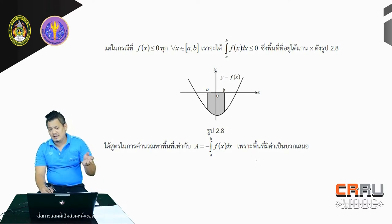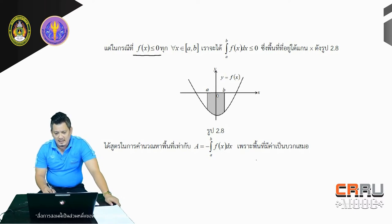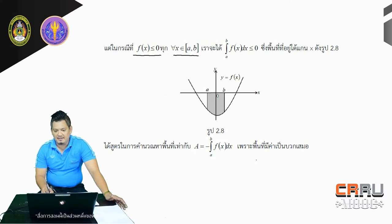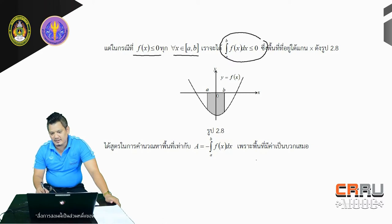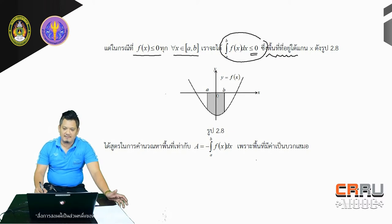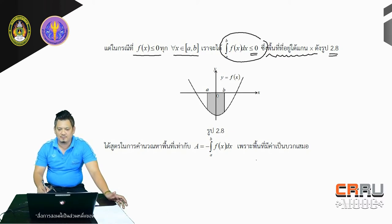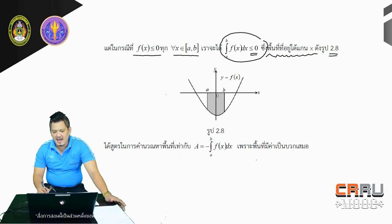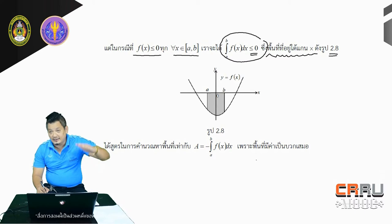If we do that, we can say that x is less than 0 for the x-axis. If we do this, we can see that the x-axis is less than 0. If we do this, we can see that the x-axis is more than 0.